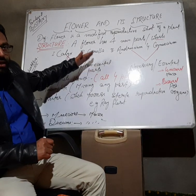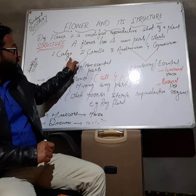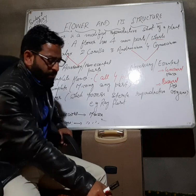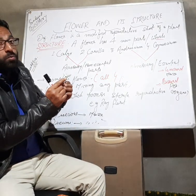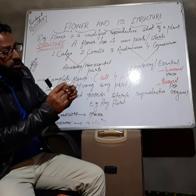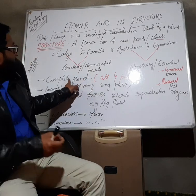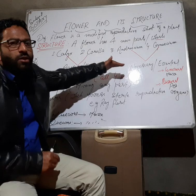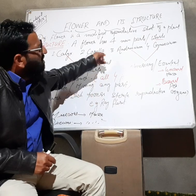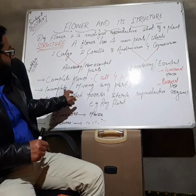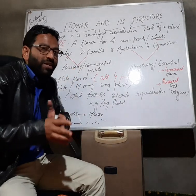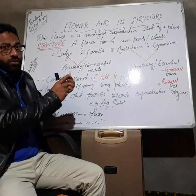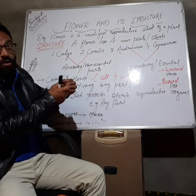In the next video I will discuss these parts one by one individually — calyx first, then corolla, and so on. Now remember: if this flower possesses all four parts — calyx, corolla, androecium, and gynoecium — then it is called a complete flower. If it is missing any one of the four organs, then it is known as an incomplete flower.